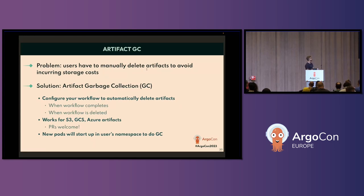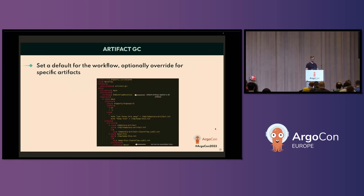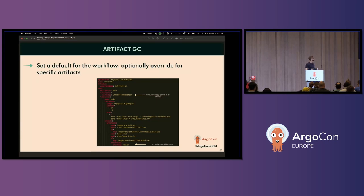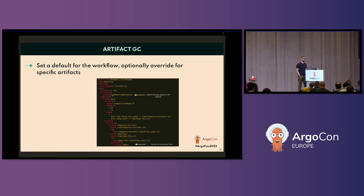Under the hood, the deletions are performed through pods that run in the user's namespace. When updating your workflow spec to include deletion policies, you can specify the policy both at the workflow level and at the artifact level. The artifact level can override what's set at the workflow level. So you can imagine having temporary artifacts being passed between steps, and then artifacts you want to keep — you can define policies for both within the same workflow.